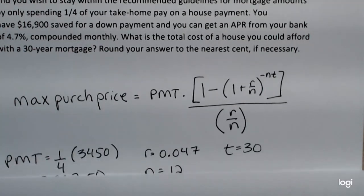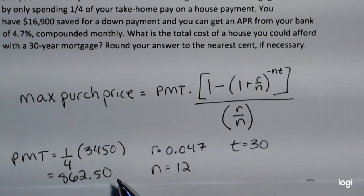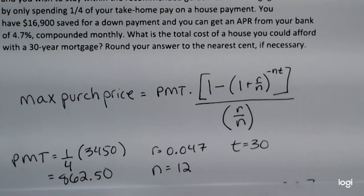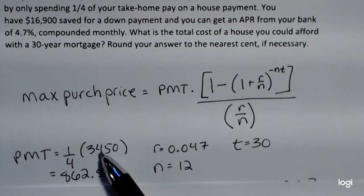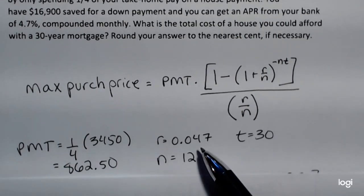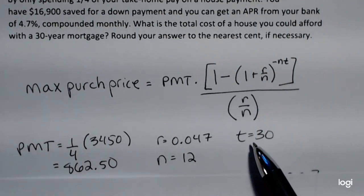Summarizing the pieces: we need the monthly payment amount. The problem states the guideline is to only spend one-fourth of your take-home pay on a house payment. So if your monthly take-home pay is $3,450, one-fourth of that gives us $862.50 — that would be your monthly payment. The interest rate as a decimal is 0.047, N is 12 since the loan is compounded monthly, and T is 30 years for a 30-year mortgage.